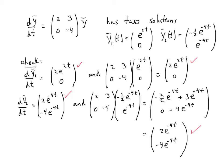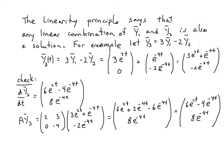I want to show that any linear combination of y1 and y2 is also a solution. Here I've taken 3 times y1 minus 2 times y2.